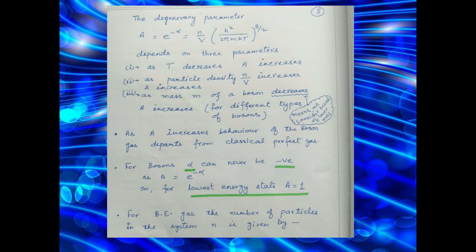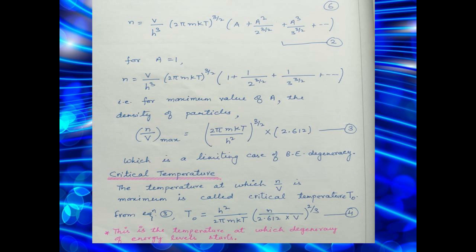For Bose-Einstein gas, the number of particles in the system can be given by N, as shown by equation number 2. For A equal to 1, we get the expression for N, and this is the maximum value of A. The density of particles corresponding to A equal to 1 is the maximum density, which is given by the relation shown in equation number 3. This is the limiting case of Bose-Einstein degeneracy.